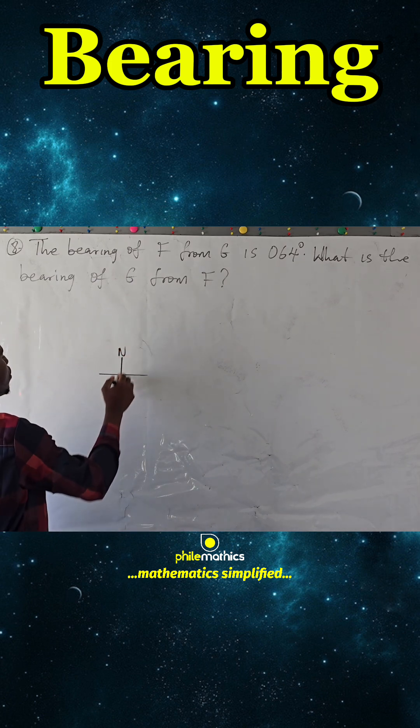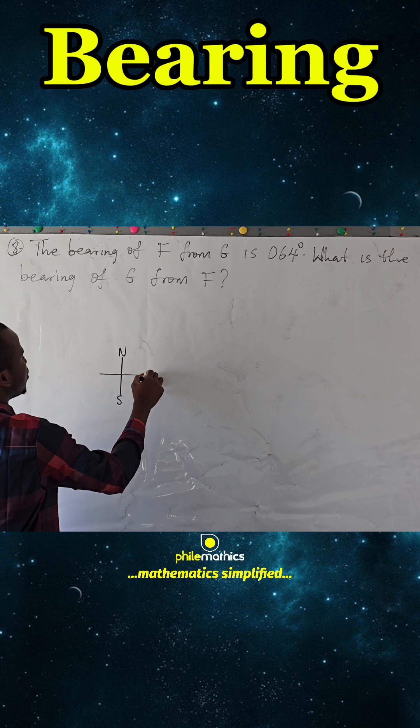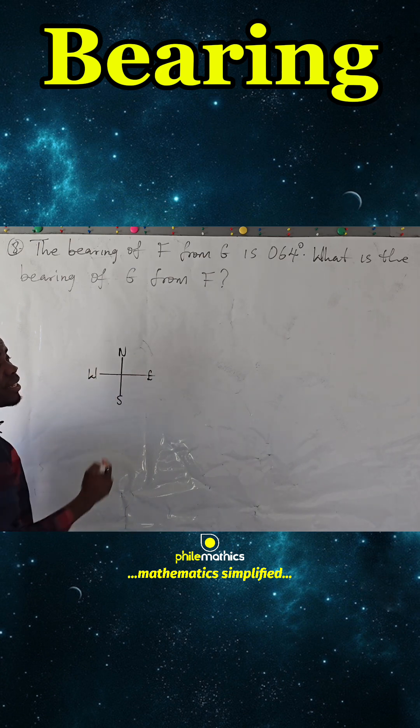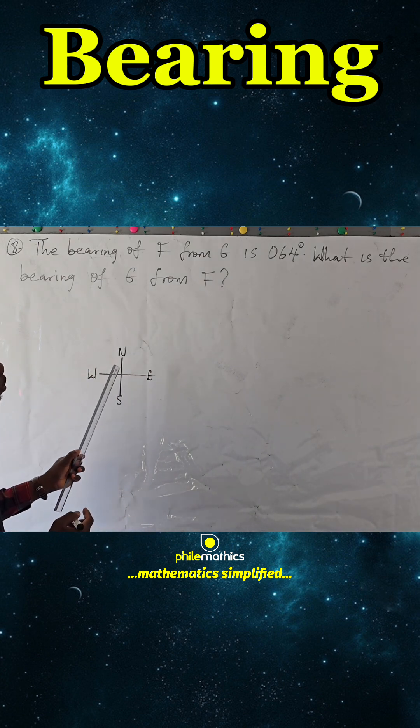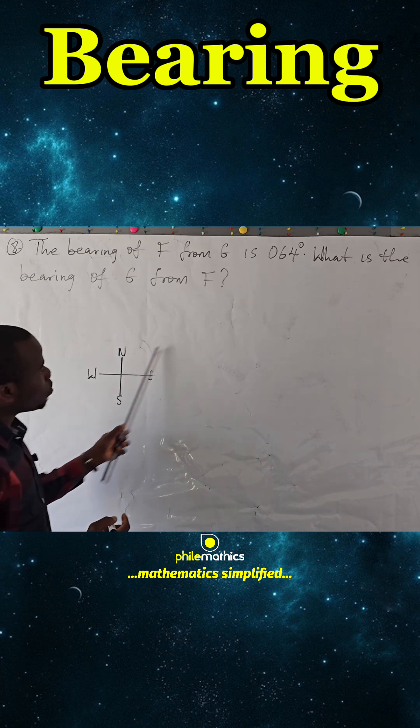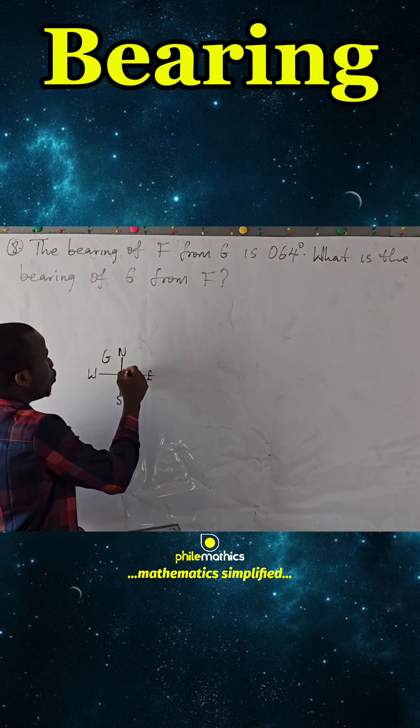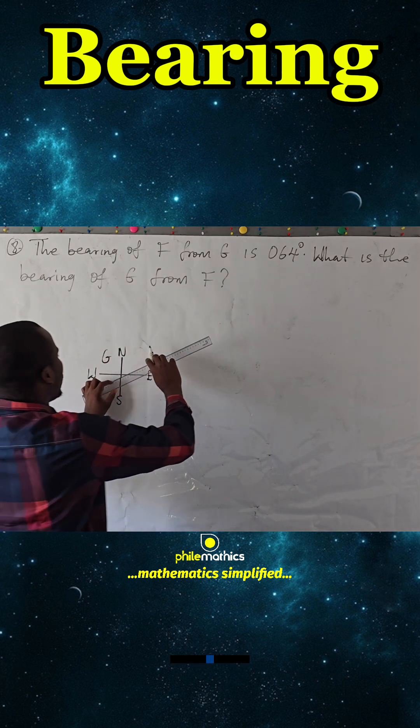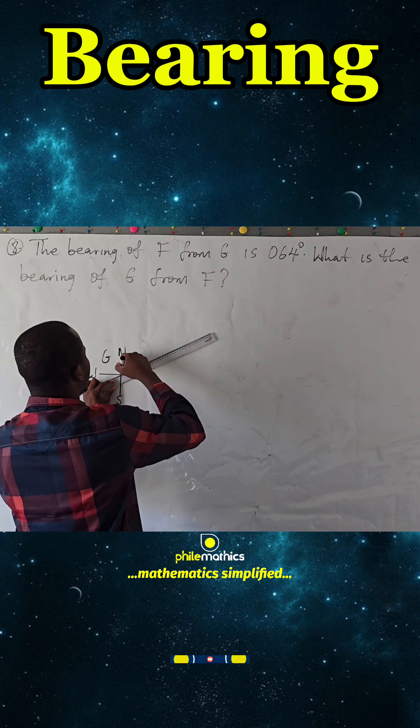This is north, south, east, west, and we know this is where 90 degrees is. Since it's coming 64 degrees from G, we know this is where to come out from, so this is what it will be.